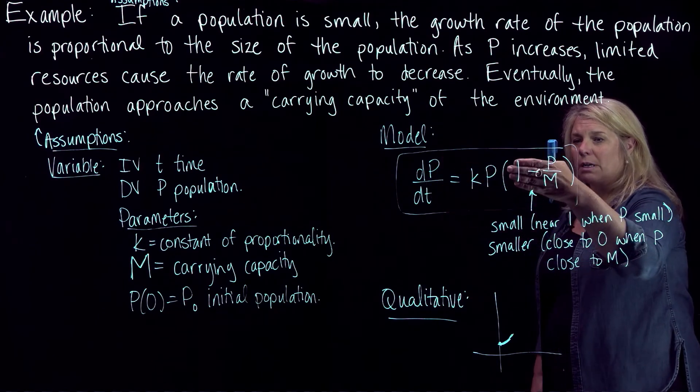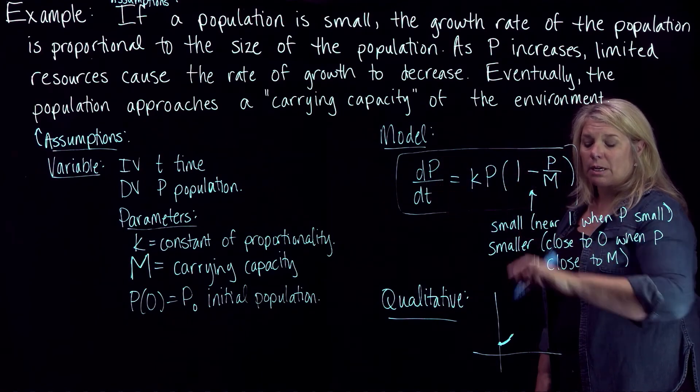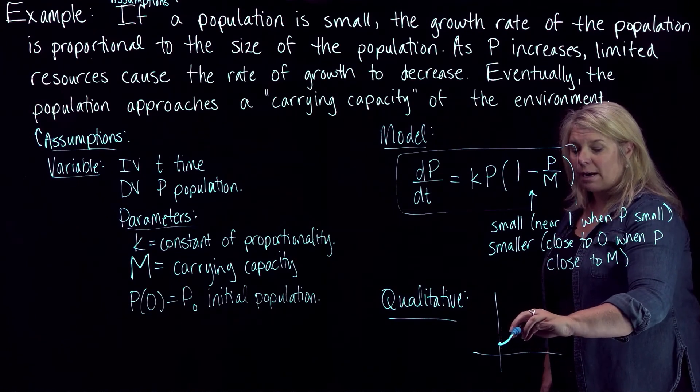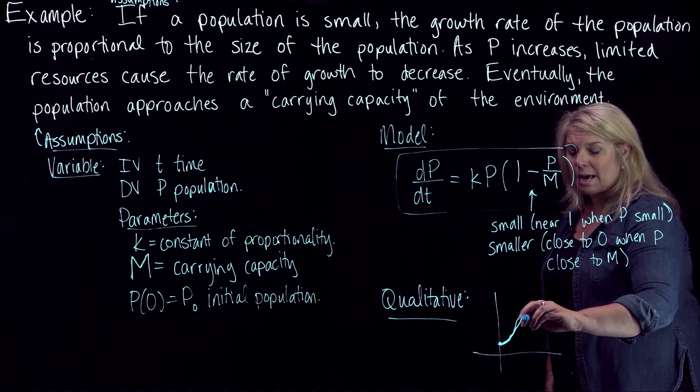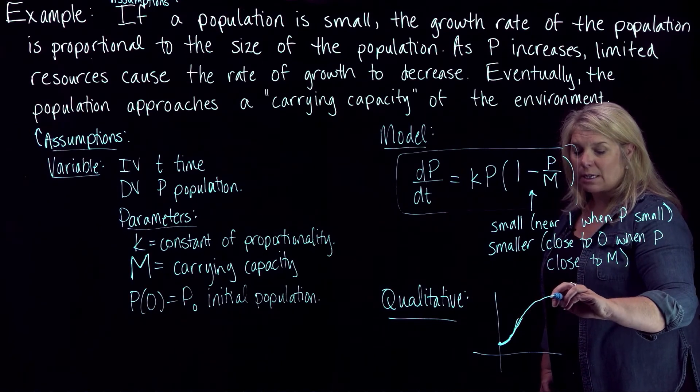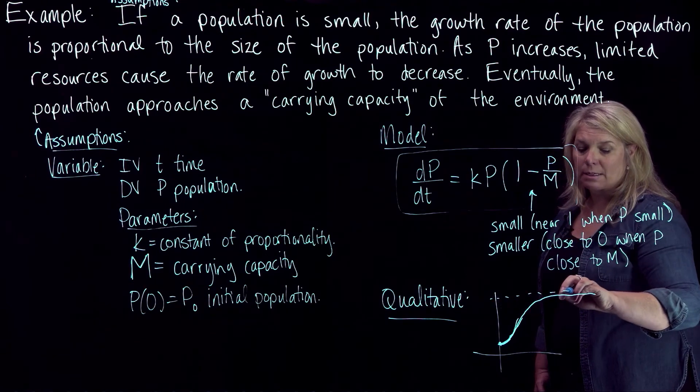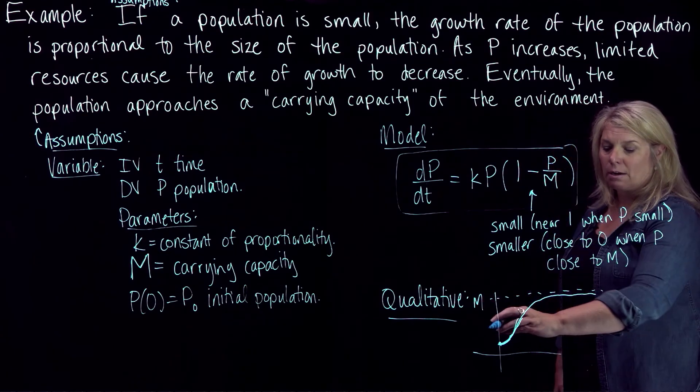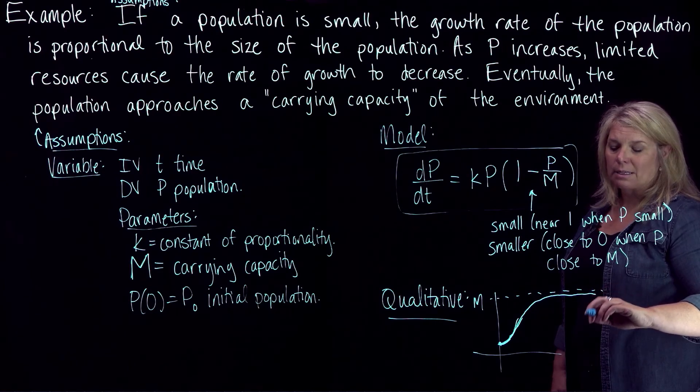Remember that the solution to the exponential equation, when this factor here was just 1, was an exponential equation. So we'd expect that graph to look like that, but you want the rate of growth then to slow, so the slope should still be positive but less, and then eventually the population levels out at some carrying capacity. So what you would expect to see is some sort of horizontal asymptote here for M, so that that population eventually levels out near that carrying capacity.